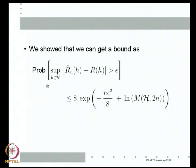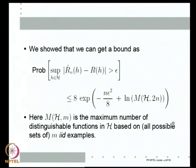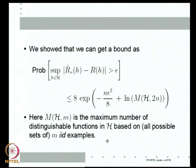We showed that the probability of the supremum difference between R-hat-n-h and R-h being greater than epsilon can be bounded above by a term involving M-H(2n), which is the maximum number of distinguishable functions in H based on all possible sample sets. For any integer m, M-H(m) is the maximum number of distinguishable functions in H based on all possible m IID examples. Given m IID examples, any two functions that take the same values on those examples are indistinguishable as far as the sample is concerned.